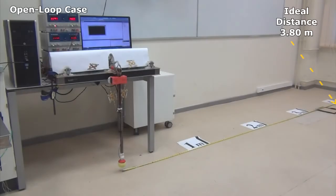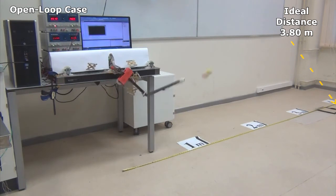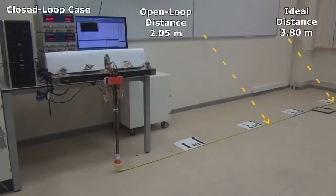In real-world experiments, with the optimal control problem reference trajectories applied in an open-loop manner, the ball-throwing distance decreases to 2.05 meters compared to the 3.80 meters ideal distance.